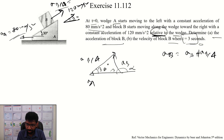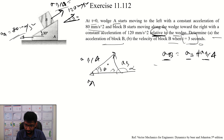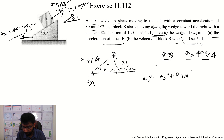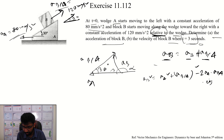Now we have to find the absolute velocity of block B. We have a vector: velocity of B equals velocity of A plus velocity of B with respect to A. Since these are not collinear, we use the law of cosines: v_B squared equals v_A squared plus v_BA squared minus 2(v_A)(v_BA) cosine of 30 degrees.